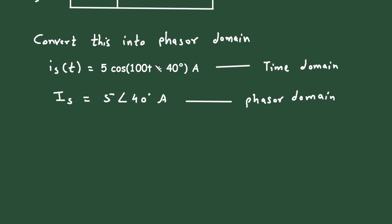If we compare this with the standard equation Im·cos(ωt + φ), we get ω = 100 radian per second.